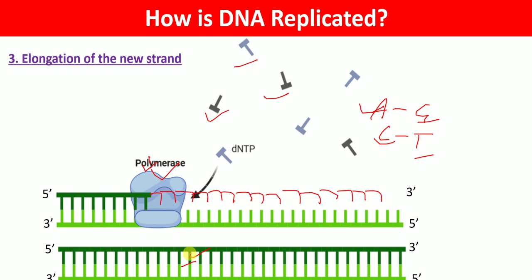In this new DNA molecule, we have half that is the newly synthesized strand and half that is the old strand. This old strand is why the DNA replication process is called a semi-conservative process.